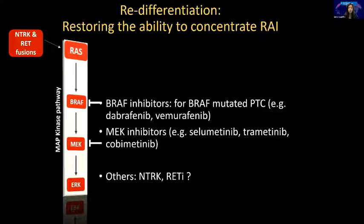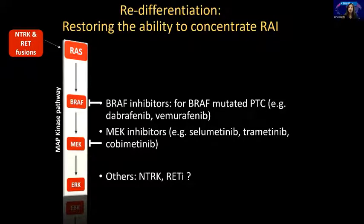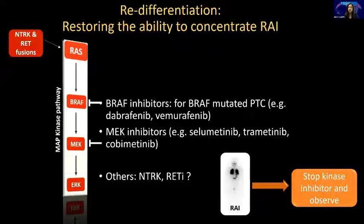Redifferentiation — the next talk is about this, so I won't go into detail — is restoring the ability to concentrate radioiodine. We do this with targeted therapies: BRAF inhibitors for BRAF-mutated patients, MEK inhibitors for RAS-mutated patients without a BRAF mutation. We're also starting to see cases in NTRK fusion and RET fusion patients on selective inhibitors who have successfully redifferentiated. The advantage is that you can then stop the kinase inhibitor, which benefits patients because all these drugs have toxicities.